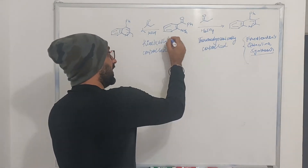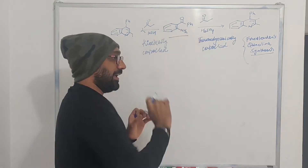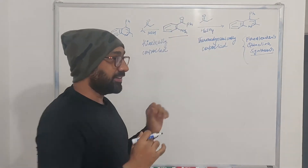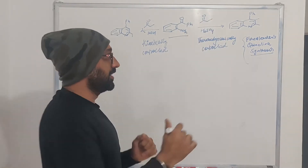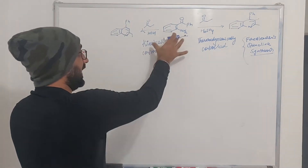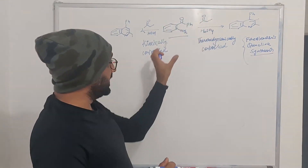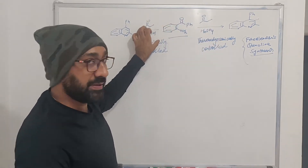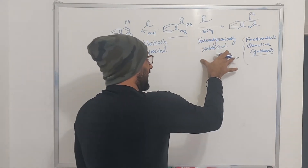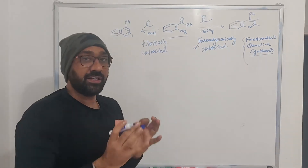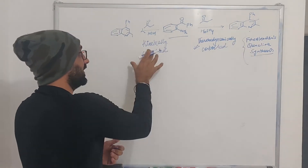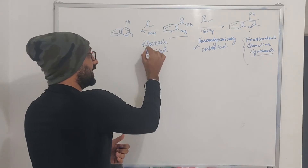Basically, what happens when we take anilines having the ketone at the 2-position and treat it with butenone in the presence of acidic conditions, we end up getting this particular compound. Whereas if we simply switch from acidic conditions to basic conditions — that is KOH — this is the compound that we get. Under acidic conditions, it is a thermodynamically controlled product, whereas under basic conditions, it is a kinetically controlled product.